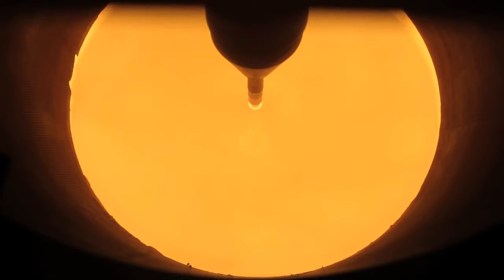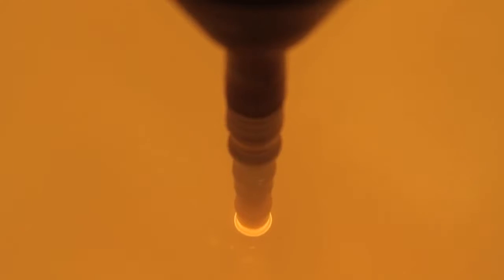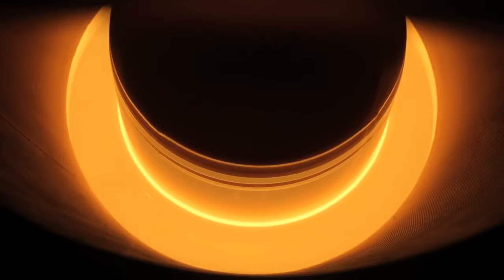A thin rod, known as the seed crystal, is then submerged into the liquid raw silicon and pulled back up very slowly.